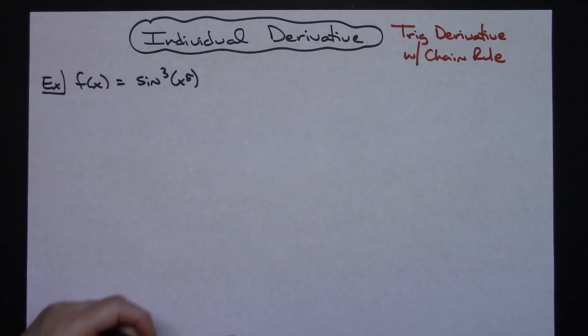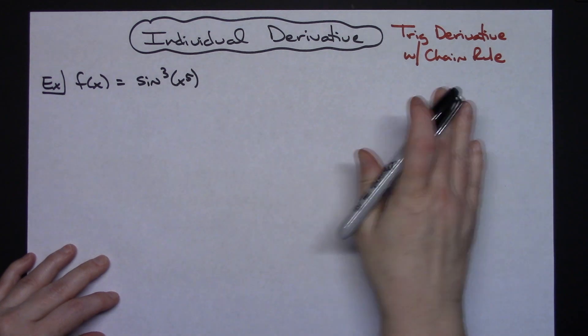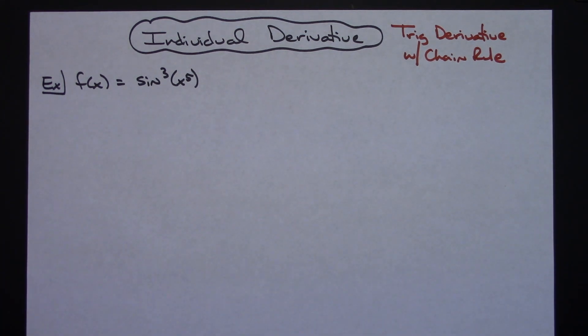In this video I'm going to work out an individual derivative. It is going to be a trig derivative that is going to have a couple chain rules in it.